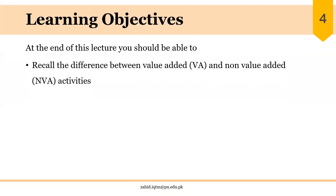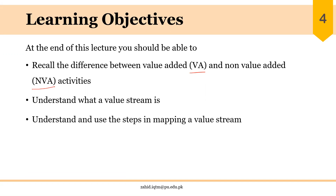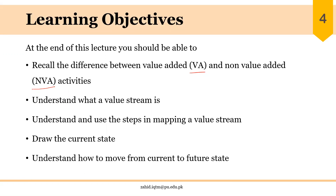At the end of this lecture, you should be able to recall the difference between value added and non-value added activities discussed in the first module. You should understand what a value stream is and what a value stream map is, understand and use the steps in mapping a value stream, be familiar with different icons and symbols used to draw a value stream map, draw the current state VSM, and understand how to move from current state to future state using lean tools.